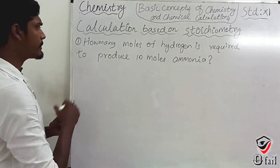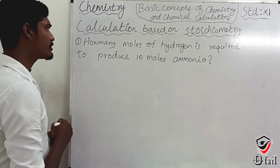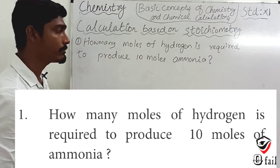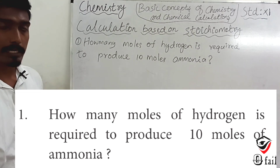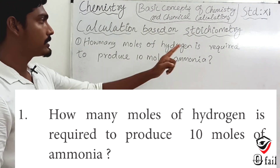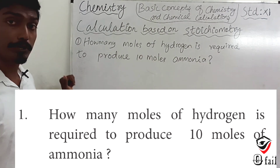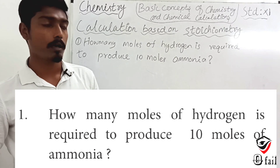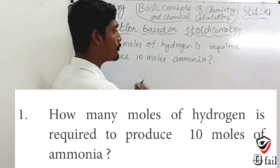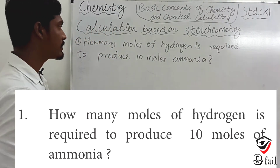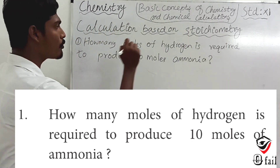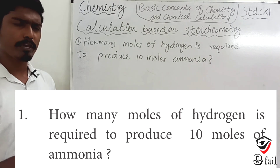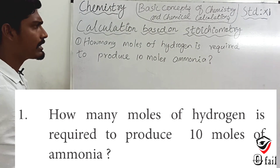First question: how many moles of hydrogen are required to produce 10 moles of ammonia? We will find out how many moles of hydrogen are needed to produce 10 moles of ammonia. First, we need the equation.